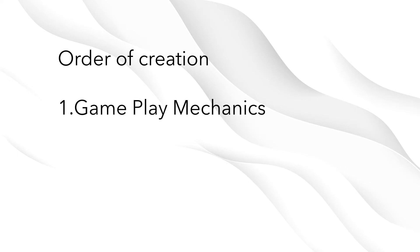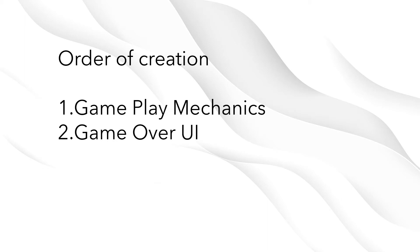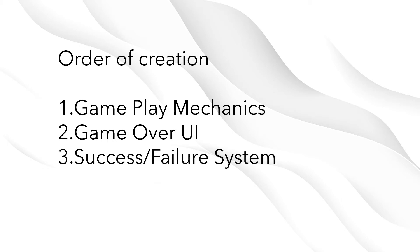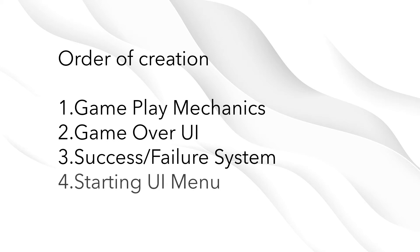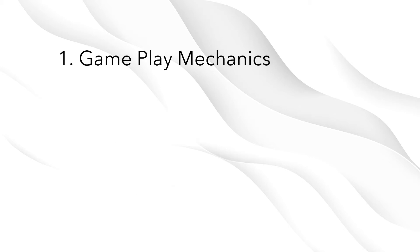This isn't necessarily how we need to create these elements though, so I've broken down the game overview into a specific order of creation. First I want to get my basic gameplay mechanics set up. Once my gameplay mechanics are done, I can move on to the game over UI. From there I can work on the success or failure system, then build out the starting menu UI. I could do the start menu first, but it feels like the gameplay is more important.